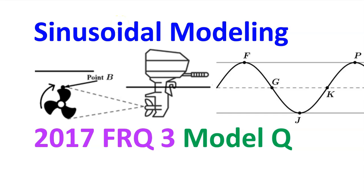There will be four free response questions on the AP exam. This video is modeled after FRQ number 3, which is about modeling real-world situations using sine functions or cosine functions. Let's pretend it's from the 2017 AP exam.